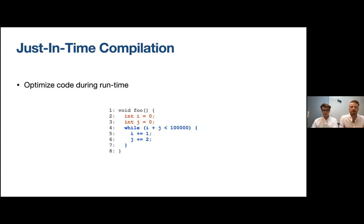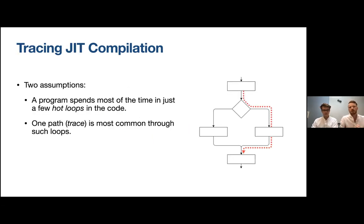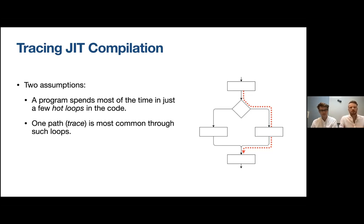There are different just-in-time compilers with different approaches for choosing what parts to optimize. This thesis focused on tracing just-in-time compilers, which base their optimizations on traces. A trace is a sequence of code, and if that code branches — like an if statement — the trace describes exactly one path through that code. The first assumption is that a program spends most of its execution time in a few hot loops. Within these loops there is a path or trace that is more commonly used than others, and that is why we only compile traces — we only want to spend time compiling code that is actually run the most.